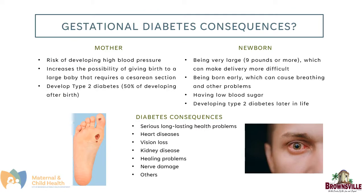The consequences of gestational diabetes for the mother include: risk of developing high blood pressure, increased possibility of giving birth to a large baby requiring a cesarean section, and developing type 2 diabetes. 50% of mothers with gestational diabetes develop type 2 diabetes after birth. Consequences for the newborn include: being very large (9 pounds or more), which can make delivery more difficult; being born early, which can cause breathing and other problems; having low blood sugar; and in the future developing type 2 diabetes. The long-lasting health problems of type 2 diabetes include heart disease, vision loss, kidney disease, healing problems, nerve damage, and others.